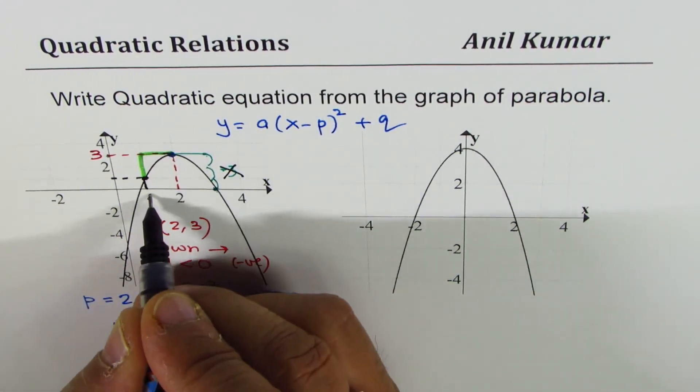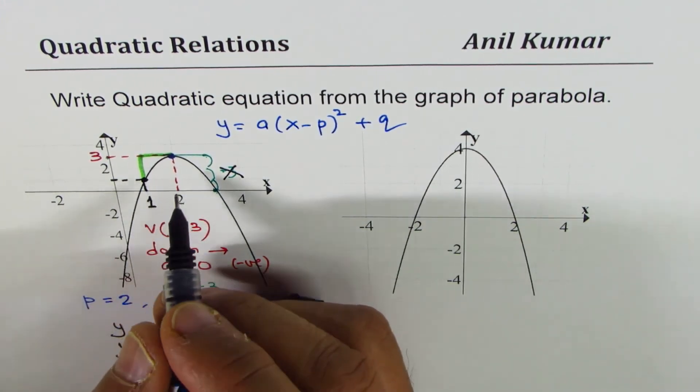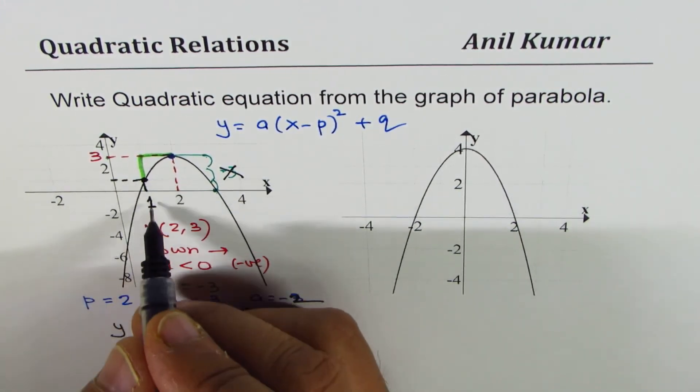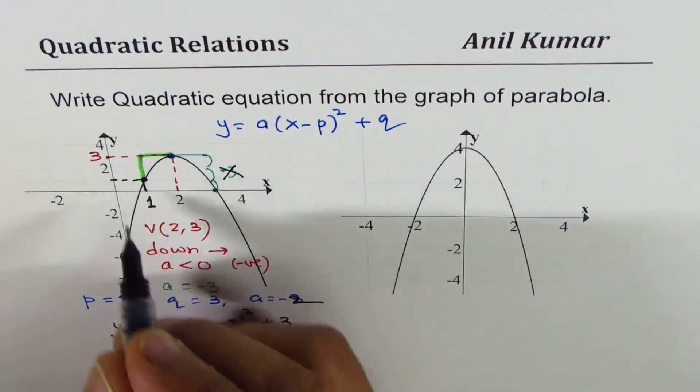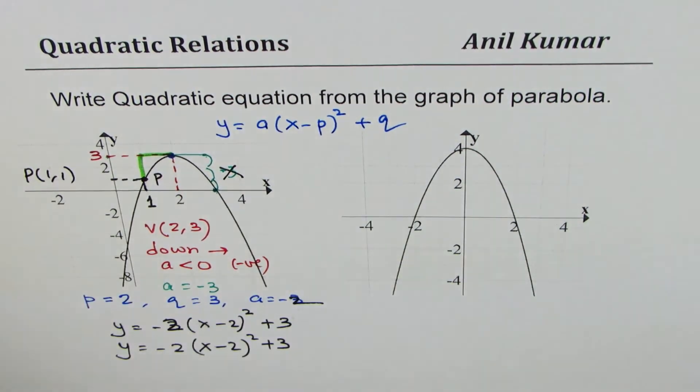So this is the point we are considering, which is 1, 1. So that is the point which we are considering on the given graph. So we will call this point as P. P is 1, 1.